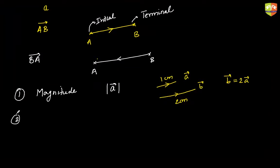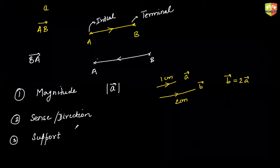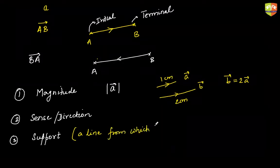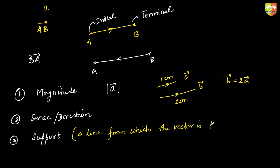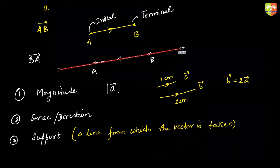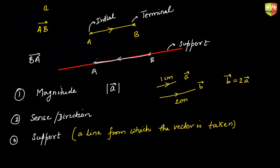The second characteristic is sense or direction, which I've already stated. The third characteristic is support. Support is basically the infinite line from which the vector has been carved out. For example, vector AB belongs to an infinite line — from this infinite line you take out the vector AB. This infinite line is called the support. Not a very important concept, but you should know the terminology.